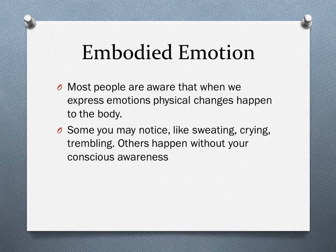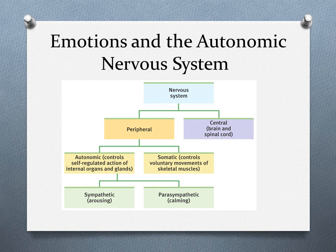Embodied emotion: when we express emotions, physical changes happen to the body — some noticeable like sweating, crying, and trembling; others without conscious awareness. As we go through this, remember the nervous system: it breaks down into central (brain and spinal cord) and peripheral. The peripheral breaks into autonomic and somatic. The autonomic further divides into sympathetic and parasympathetic — emotions will arouse one of these two systems.